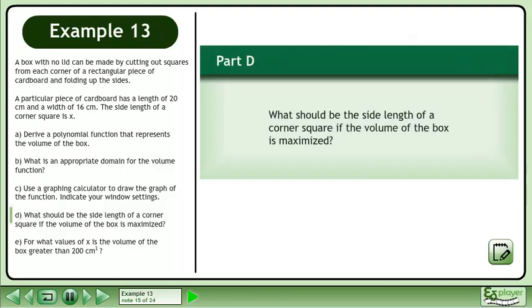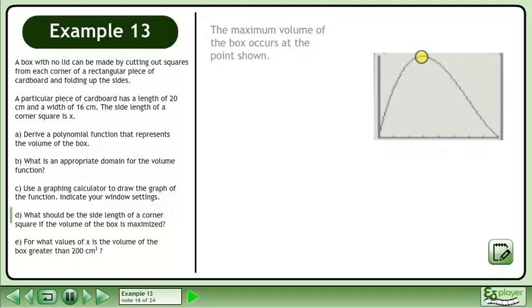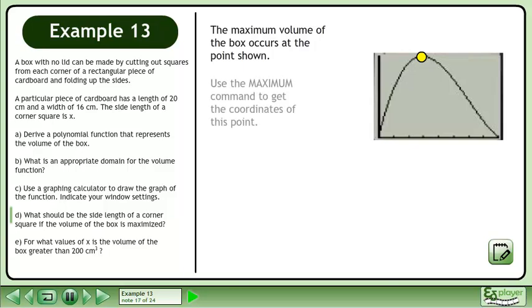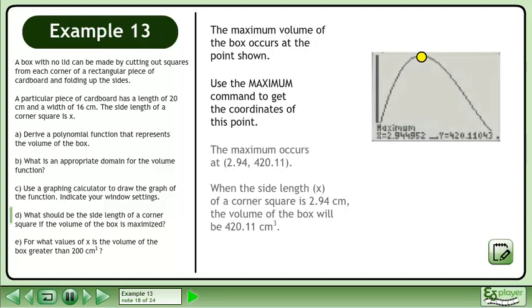In Part D, what should be the side length of a corner square if the volume of the box is maximized? The maximum volume of the box occurs at the point shown. Use the maximum command to get the coordinates of this point. The maximum occurs at (2.94, 420.11). When the side length of a corner square is 2.94 cm, the volume of the box will be 420.11 cm³.